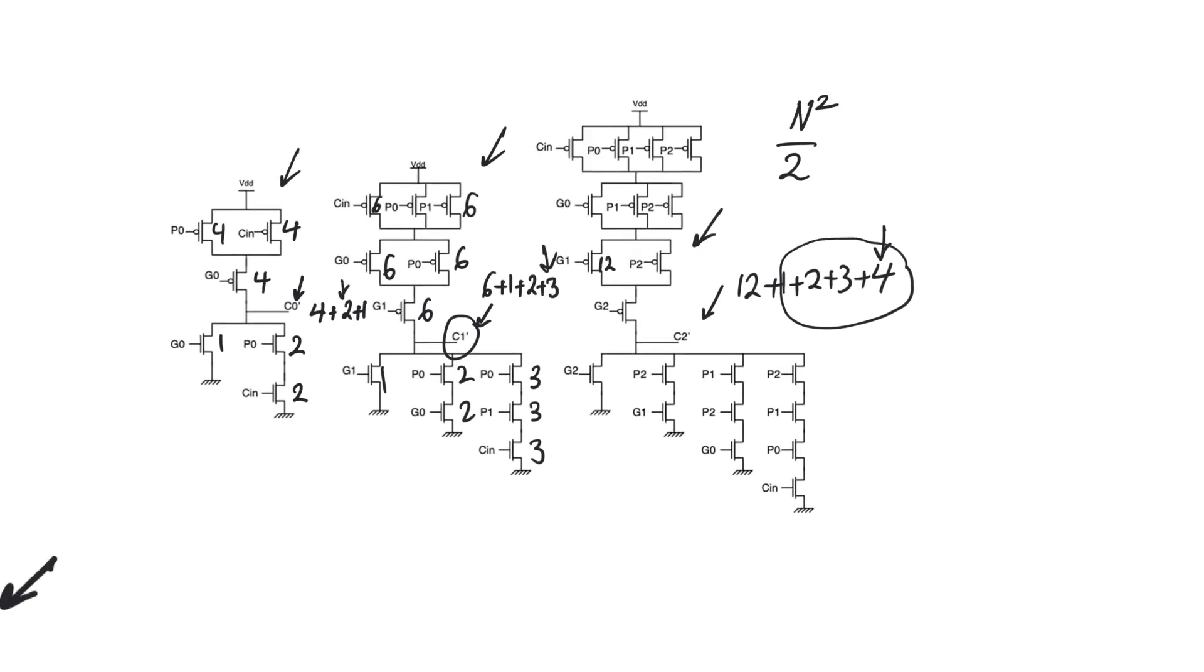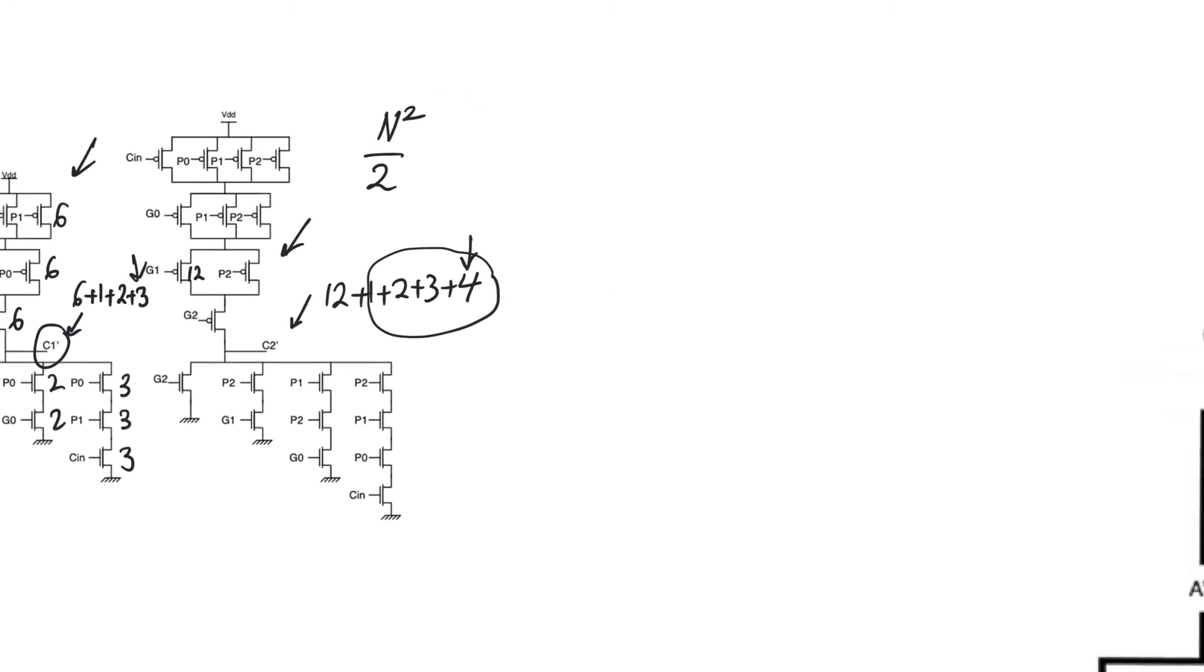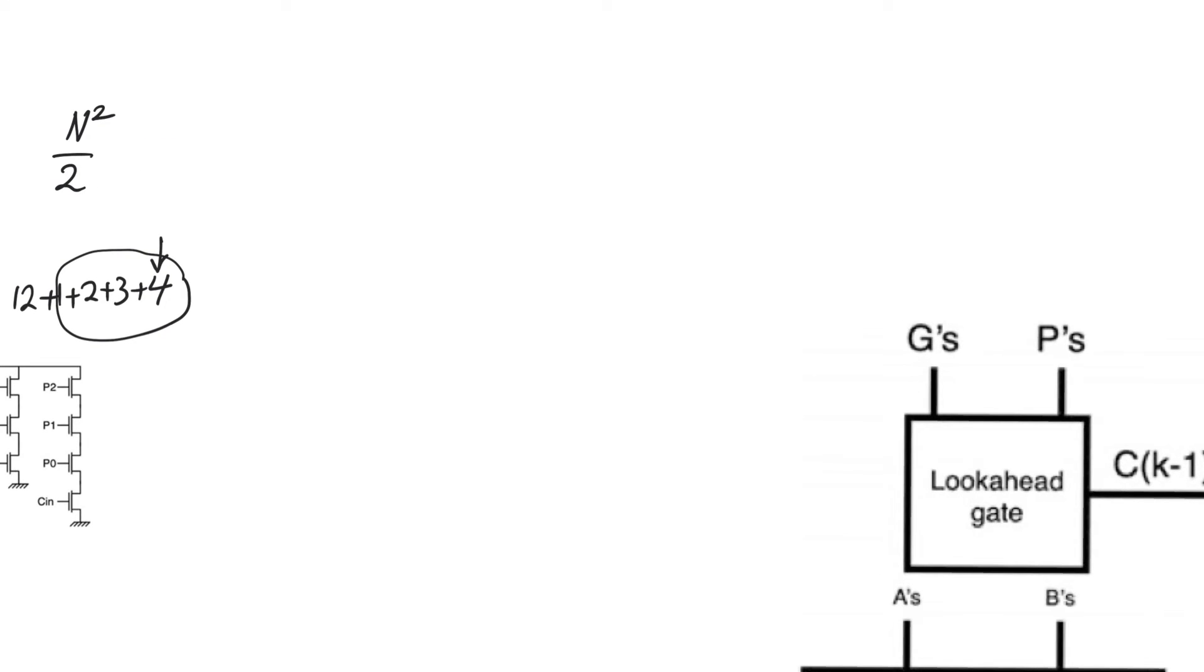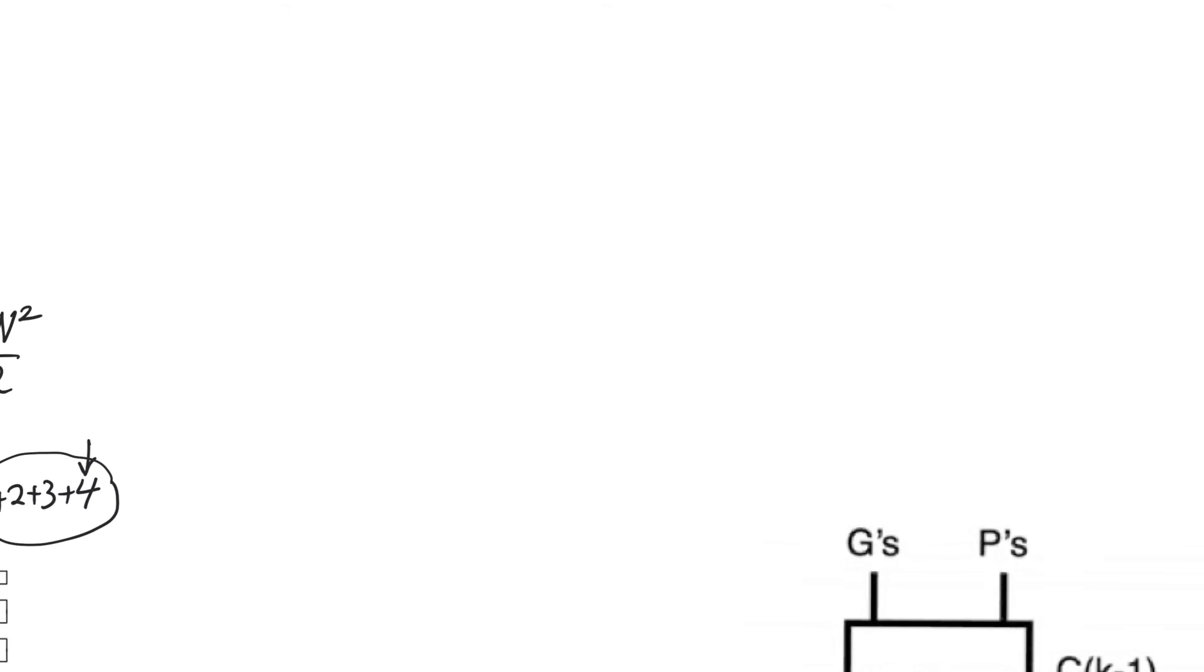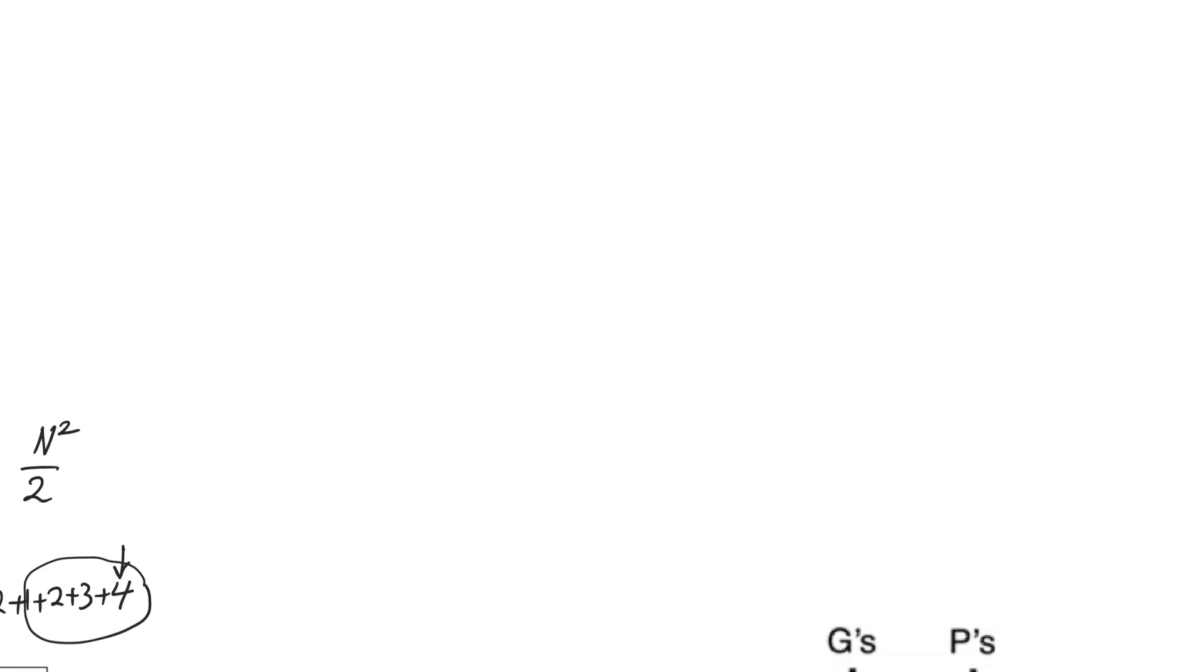However, there is some use we can get out of our look-ahead adders, especially when implemented using the Manchester carry path. Going back to the Manchester carry path, it was basically a bunch of dynamic CMOS gates. Each stage would calculate the value of C0 bar or C output bar, based on either the carry-in being propagated or the carry-in being generated using a pull-down network.